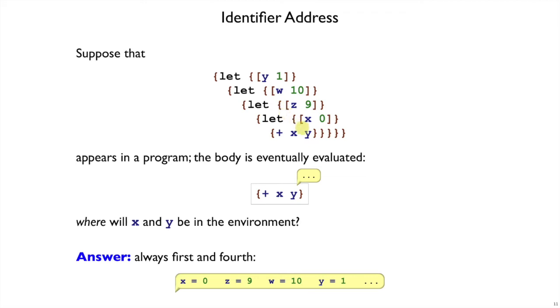We can just count the enclosing lets to find the one that binds y to predict where this y is going to be found. Again, not dependent on the rest of the program.